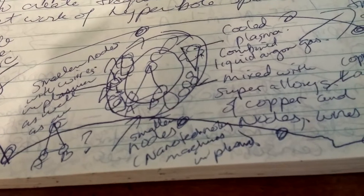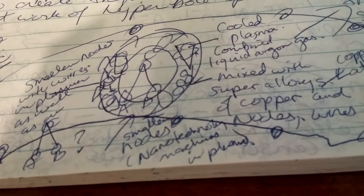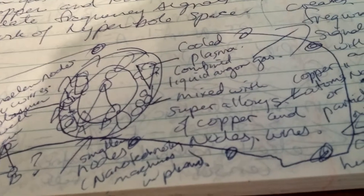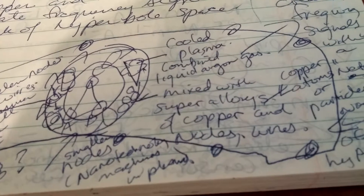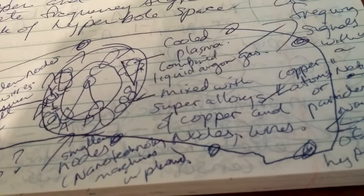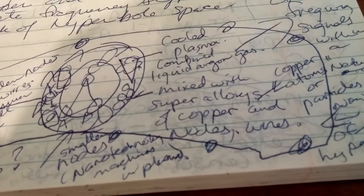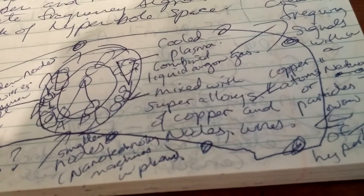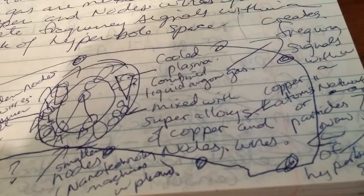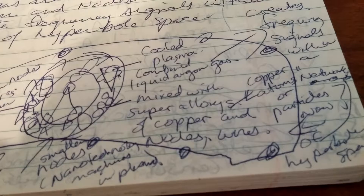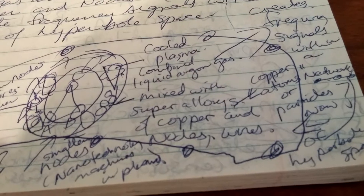This shows smaller nodes — nanotechnology machines in plasma. It also shows cluoplasma combined with liquid argon gas, which creates a frequency signal within a network.